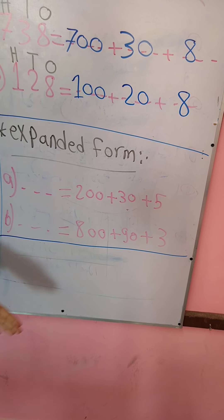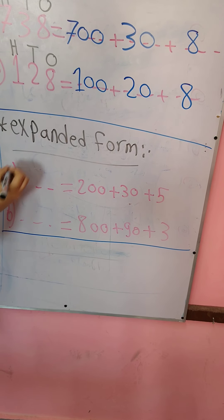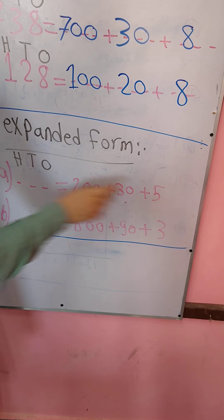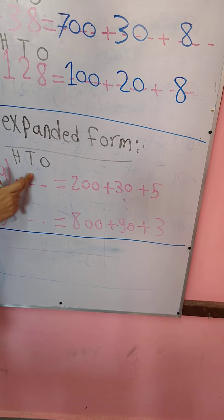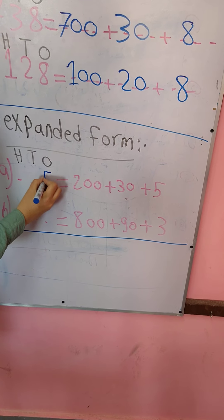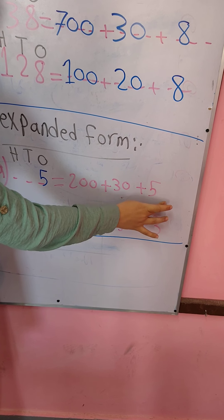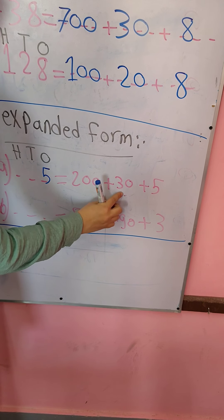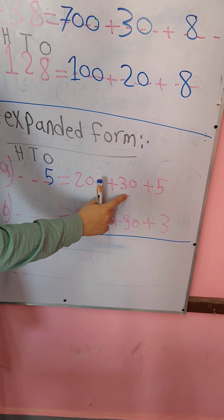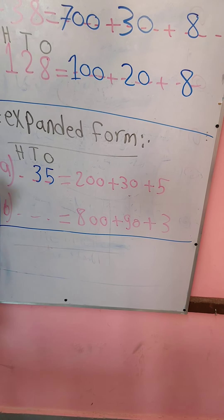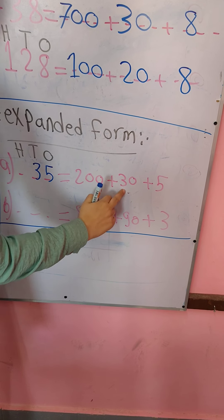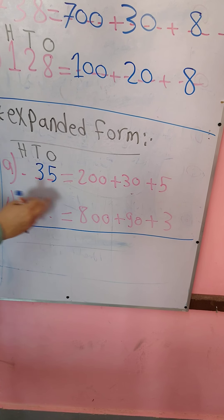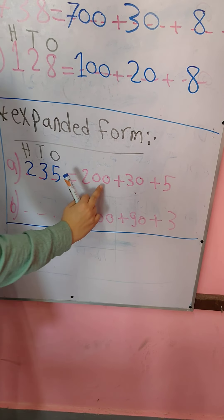Here we have expanded form. I'll write H, T, O. We have the number 5 — I'll write 5 in the ones place because 5 has no zeros. Here I have 30 — I write 3 in the tens place because 3 has one zero. Here I have 200 — 2 with two zeros, so I write number 2 in the hundreds place. So the number is 235.